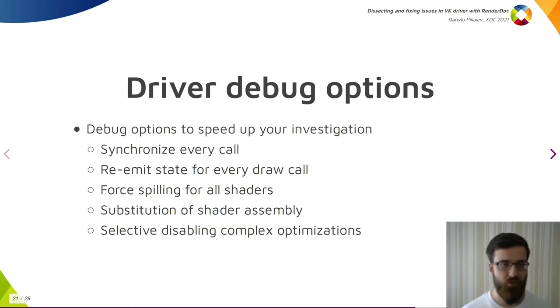The driver itself could have ways to debug an issue. There are several debug options which are great to have in the driver. Option to synchronize every call helps detecting synchronization issues, saving a lot of time. Forcing the re-emission of state for every draw call helps catching the issues with updates of the state. After that you could bisect the state to find which one exactly causes the trouble. Fourth is the spilling for shader registers - maybe a crude way to check if issue is related to shader miscompilation or spilling itself. Substitution of shader assembly I mentioned before. Depending on the driver there could be many more useful toggles.